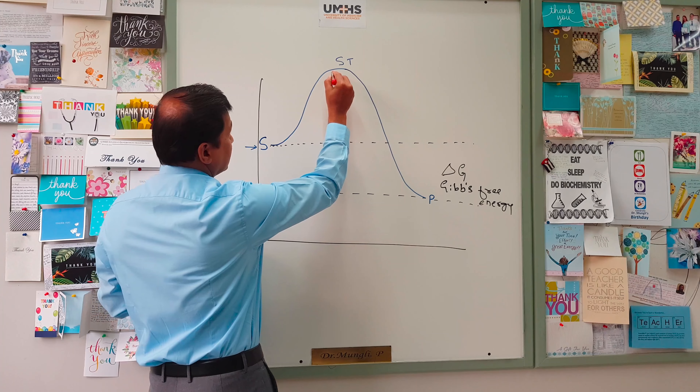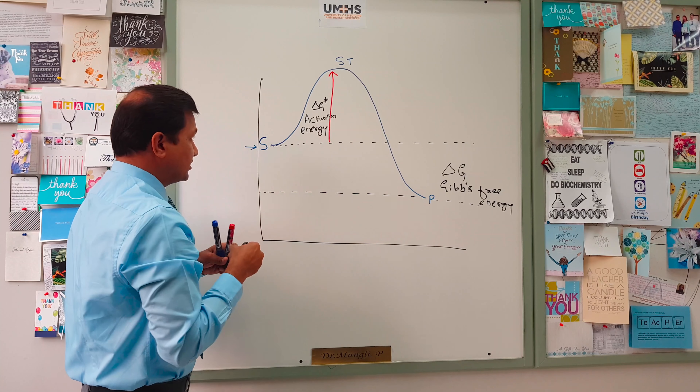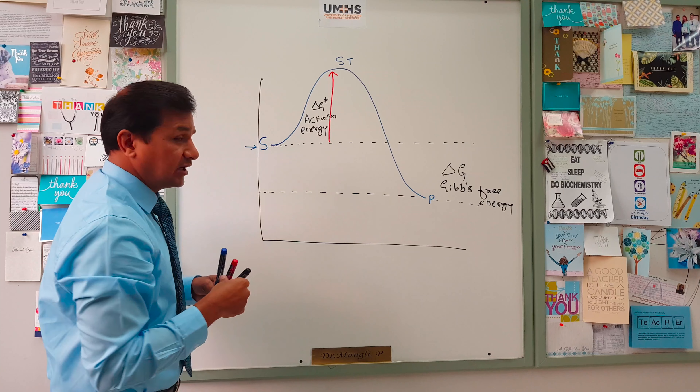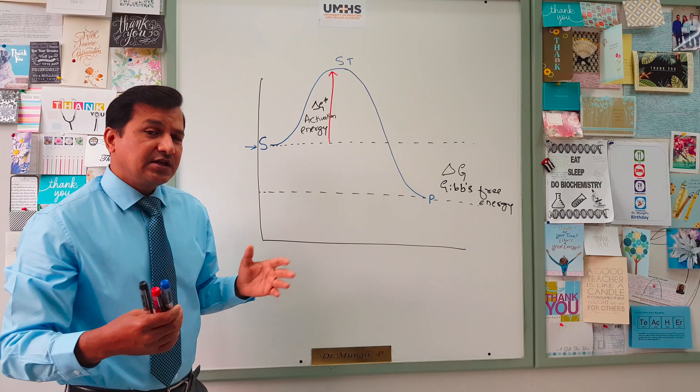The energy required to take the substrate into its transition state is denoted as delta G double-plus (delta G++), which is referred to as activation energy. Activation energy is the energy required for a substrate to go into its transition state, and this happens in the absence of enzyme. This is what the delta G++ or activation energy looks like in the absence of enzyme.